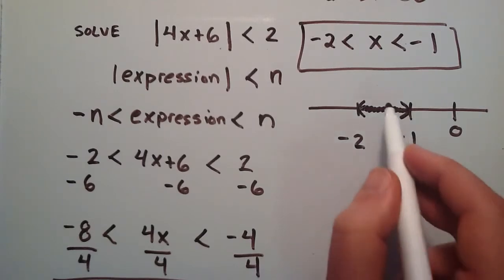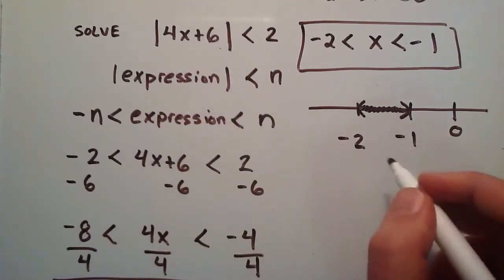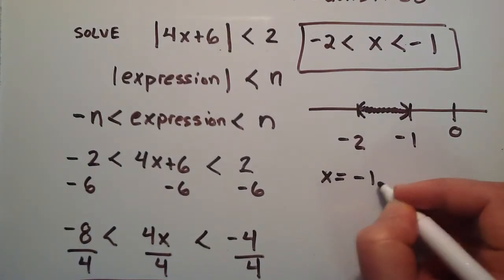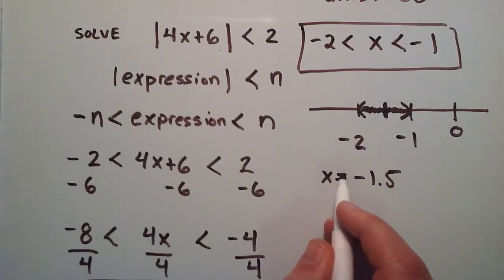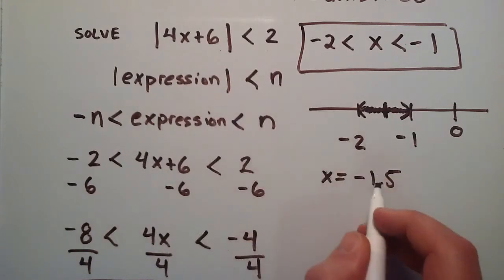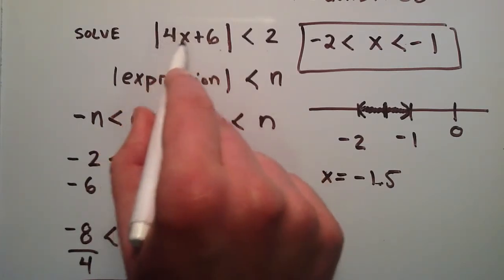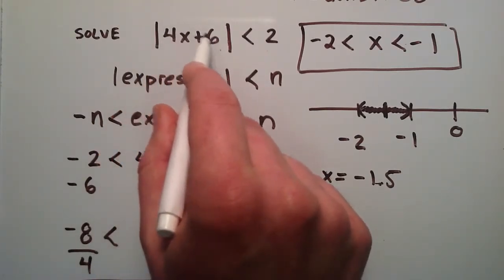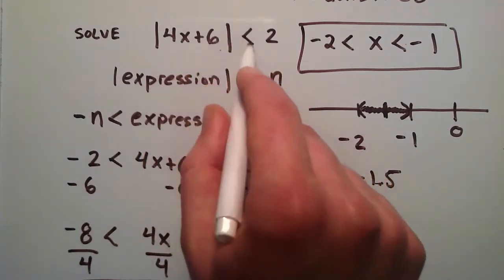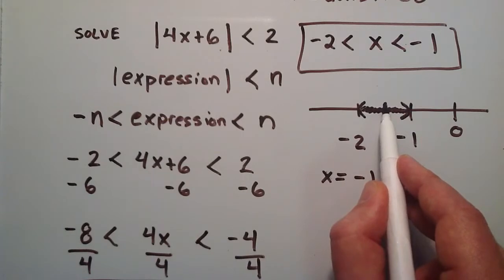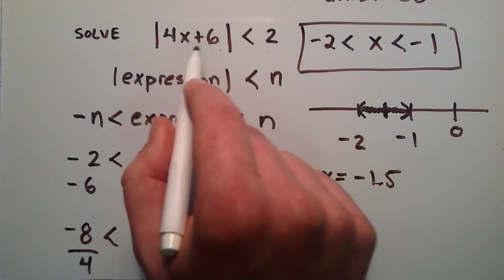For example, we could choose any number in this range. Let's pick negative 1.5. If x equals negative 1.5, then we plug this in. 4 times negative 1.5 gives us negative 6, and we add 6 to that. Negative 6 plus 6 equals 0. The absolute value of 0 is 0, and 0 is less than 2. So by picking x equals negative 1.5, we get the true statement that 0 is less than 2.